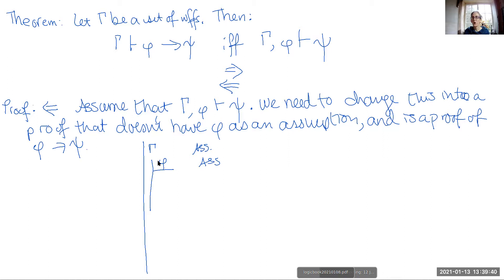We are going to kind of highlight this as the assumption that we are interested essentially in getting rid of. So what we are doing is this phi is going to move from the left hand side of the turnstile over to the right hand side.